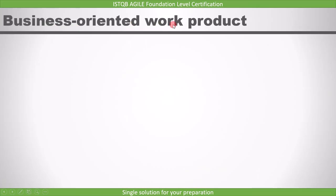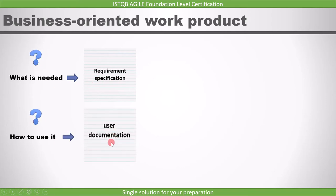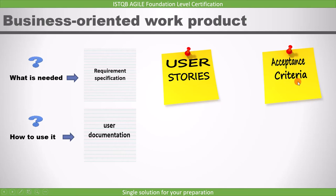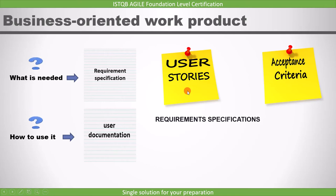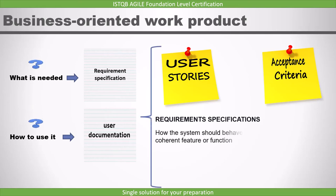First is the business-oriented work product, which describes what is needed and how to use it. For example, a requirement specification describes what is needed, and user documentation describes how to use it. Typical business-oriented work products on agile projects include user stories and acceptance criteria. In traditional projects we use the term 'requirement,' and in agile, requirements are referred to as user stories, provided by the business stakeholder — therefore user stories are a business-oriented work product.